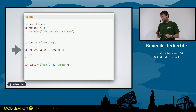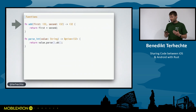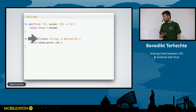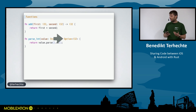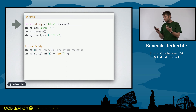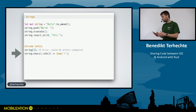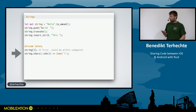Rust provides the same Unicode safety as Swift, meaning you can't just index into a string because you could end up between two Unicode code points. You have to iterate over characters to get the right one — similar to how Swift did it in Swift 3. Then there are structs, which we know from C and Swift. Generics work the same way too, with a container of generic type T and type constraints like requiring T to be equatable.